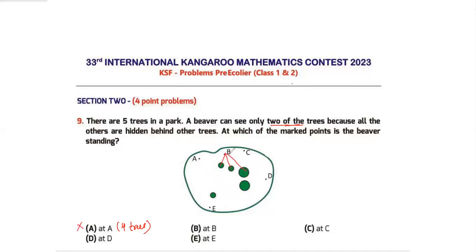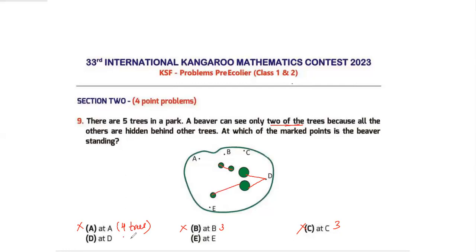Likewise for C, you'd be able to see three trees, so that's not the answer either. Now if the beaver is standing at D, it will see this tree and this tree — the others get hidden behind these — so D allows seeing only two trees. My answer is option D.